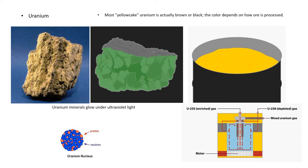Here in this picture is shown uranium ore. The second picture is uranium mineral glowing under ultraviolet light. The third picture shows that most yellow cake uranium is usually brown or black — the color depends upon how the ore is processed. A processing method is shown below in the picture.